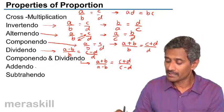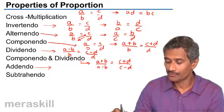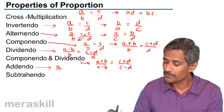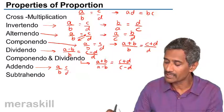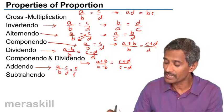And then we have addendo. This means that suppose you have a number of ratios: A by B, C by D, E by F, etc. All these are equal.